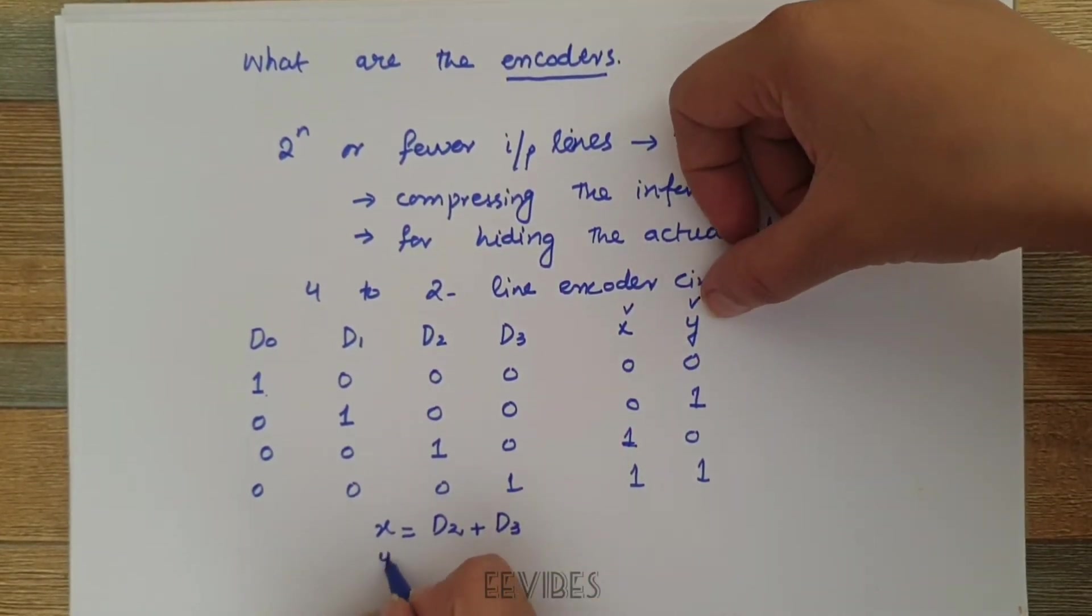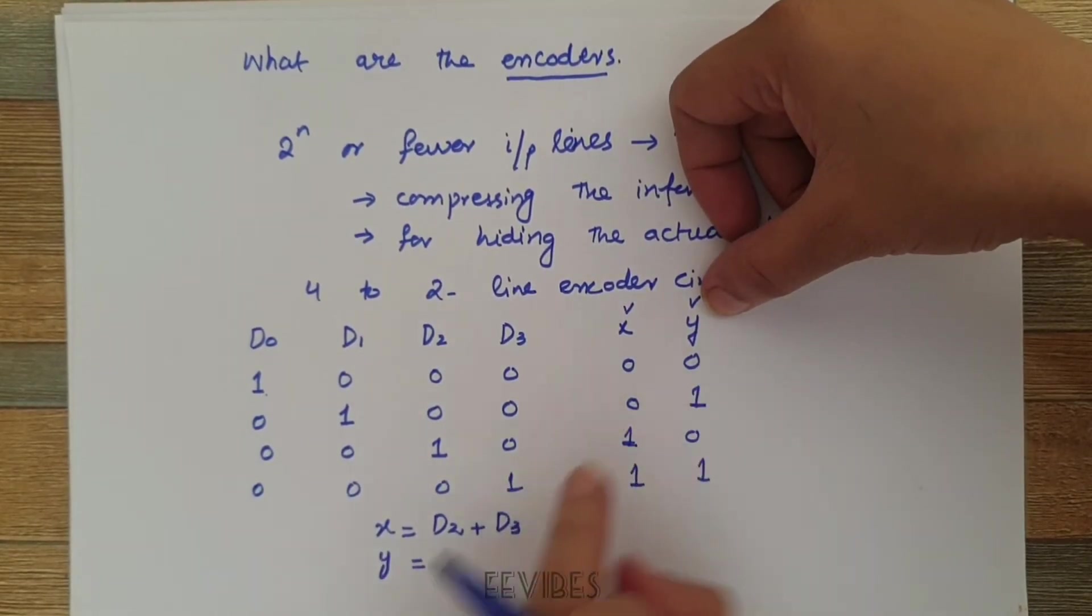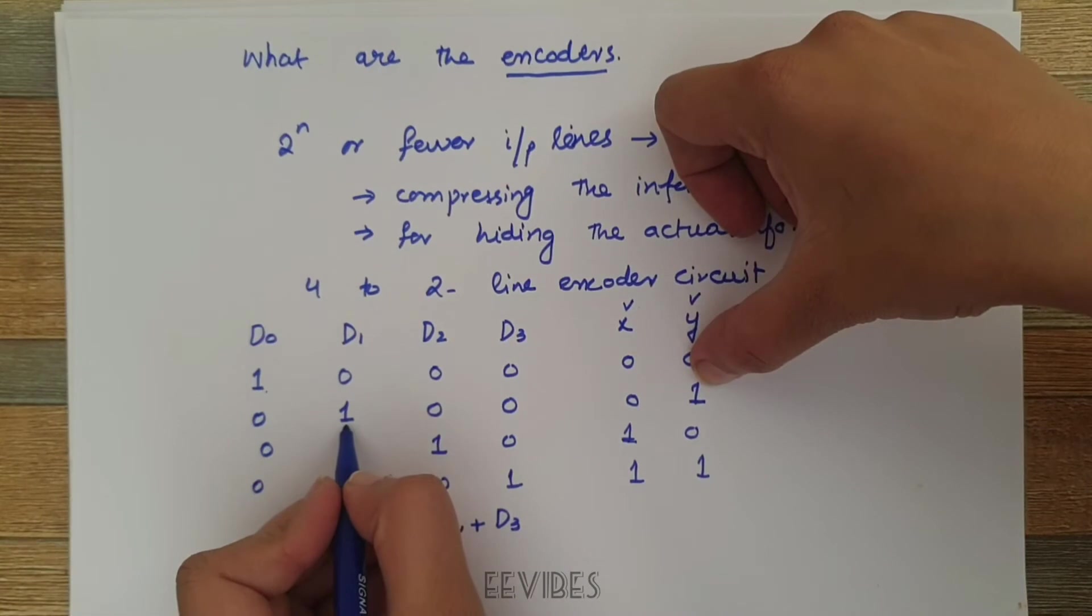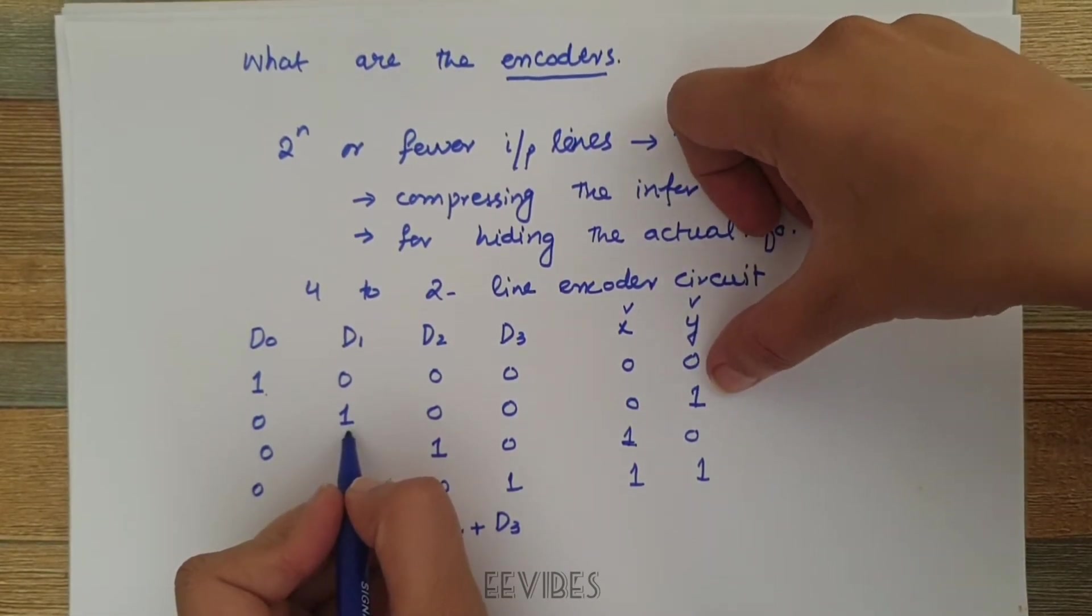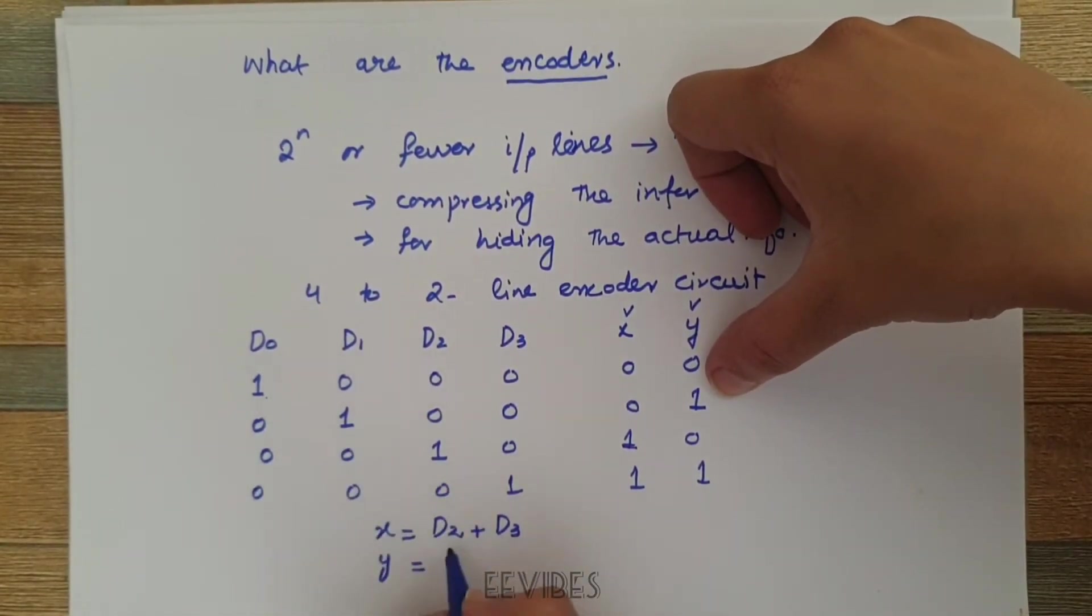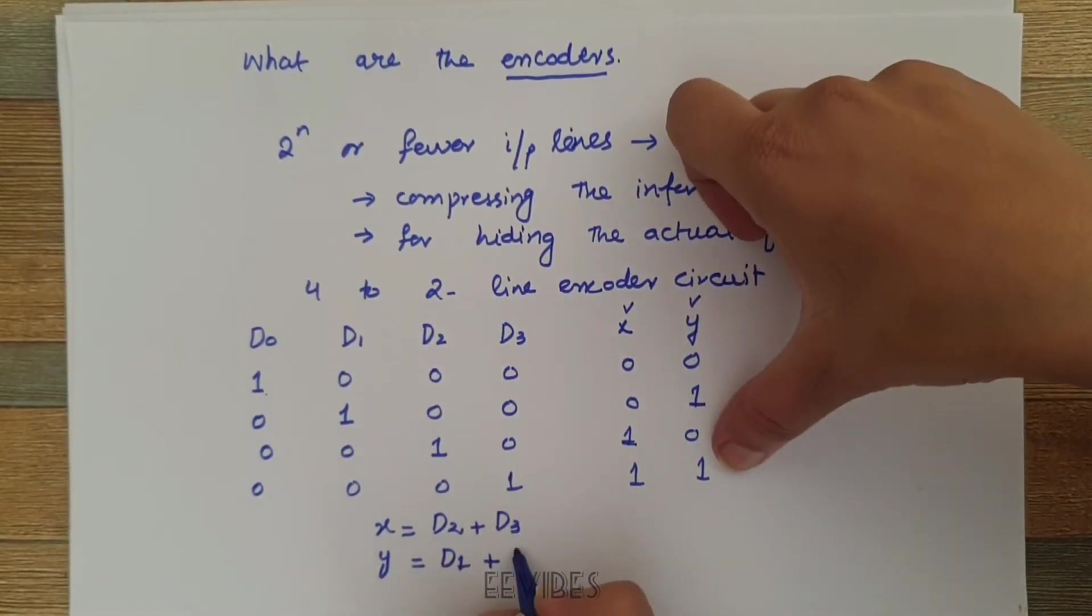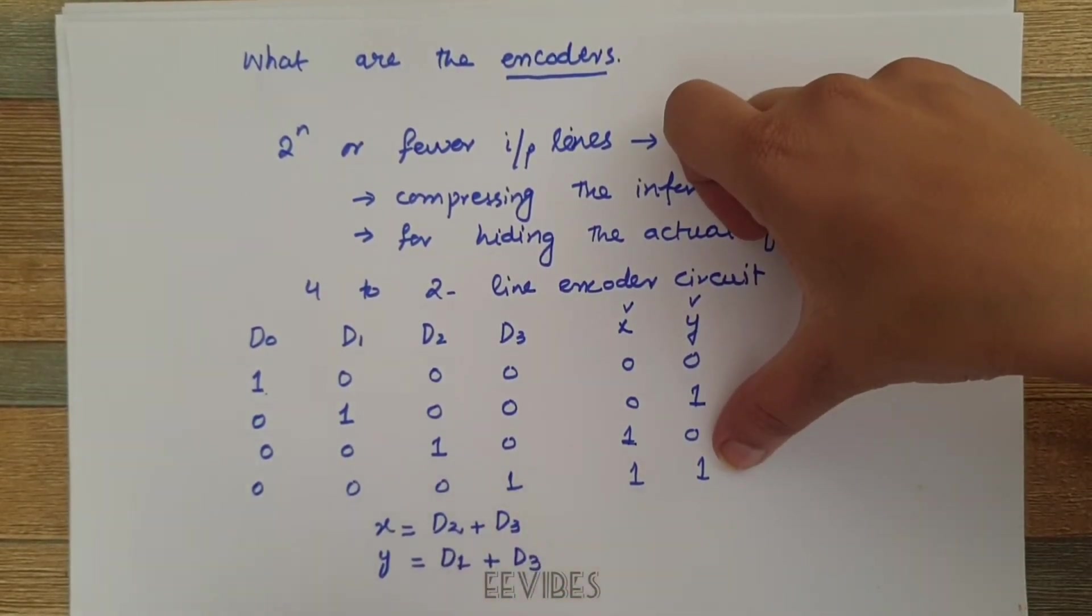Similarly for the output function y, you can simply use the OR gate for ORing the corresponding input lines where the value of y is equal to 1. That's why y can be represented as the summation of D1 and D3.